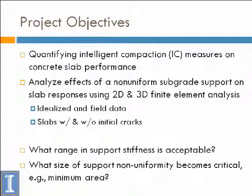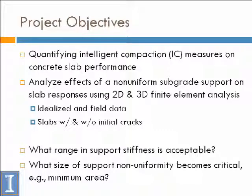We started out looking at 2D, and now 3D analysis of the data and of idealized cases. The first thing we did was idealized cases — is this really something we're going to worry about, and how much effort should we put into this? Then we extended that to look at a combination of factors: non-uniformity of soil plus cracks that exist in the slab from a variety of mechanisms. Then we get down to the practical side: if we can use intelligent compaction, how do we define what's acceptable, what stiffness ranges are acceptable, and what size of areas that are non-uniform should we be concerned about?